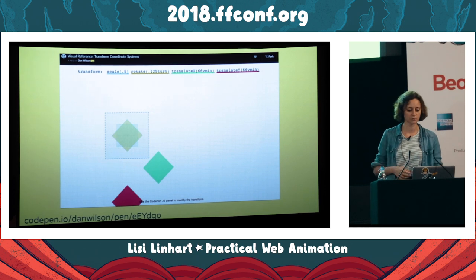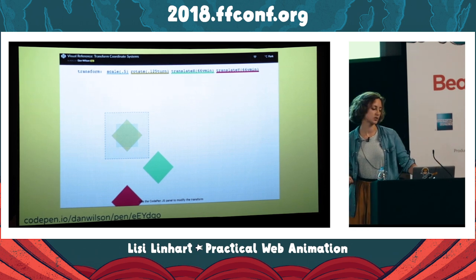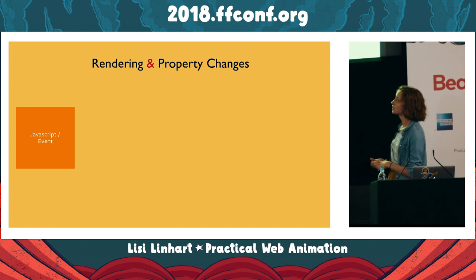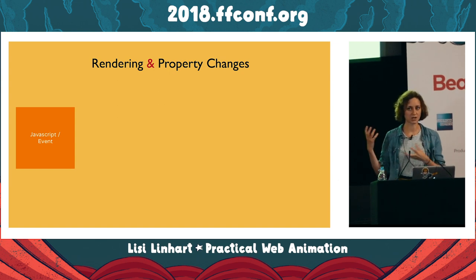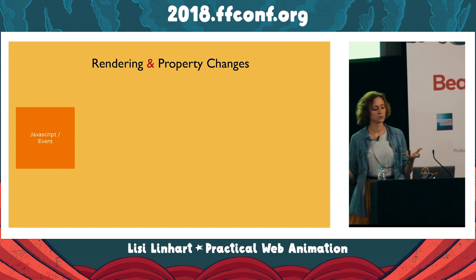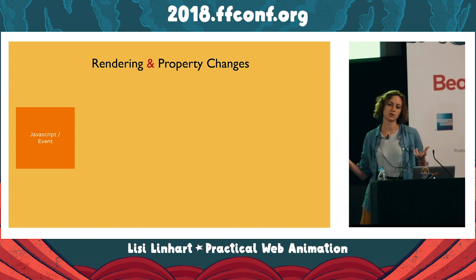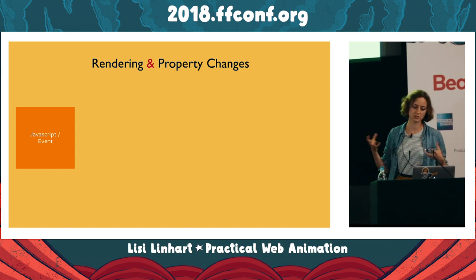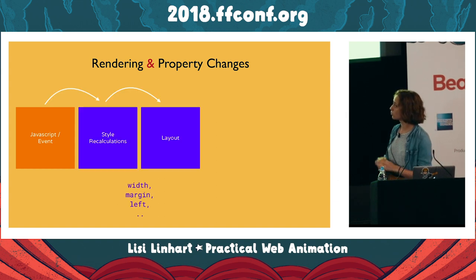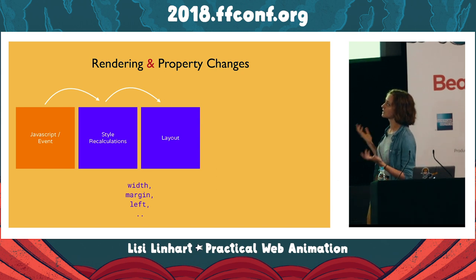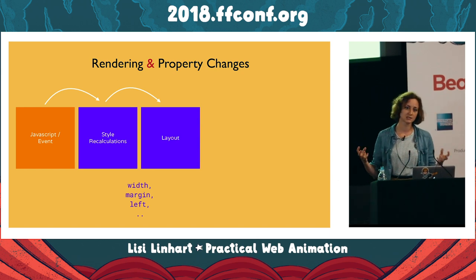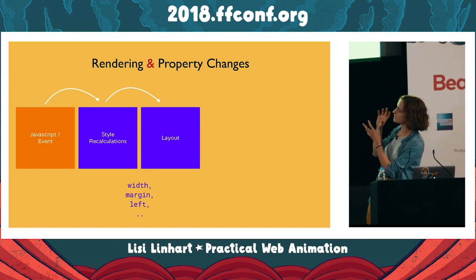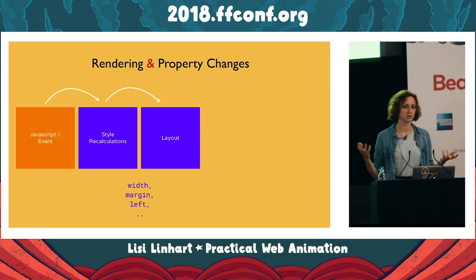What actually happens when we change a CSS property? The first step in how pixels are generated in the browser is some JavaScript or CSS event — like a DOM element added to the DOM or a hover interaction. When you change a layout property like width, margin, or left, the browser has to go through style recalculations and layout — figuring out how much space every element needs and reflowing the whole page. This is the step where we shouldn't animate with margin or layout properties.